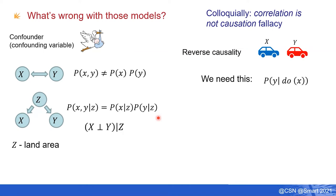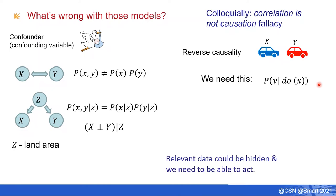To conclude from these examples: we need relevant data from all kinds of situations, and ideally we need to be able to act in the world in addition to having that relevant data.